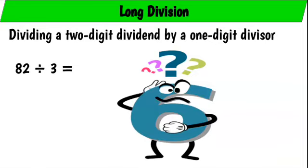Now let's divide a two-digit dividend by a one-digit divisor: 82 divided by 3 using our steps.